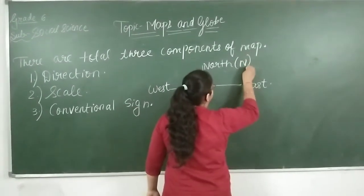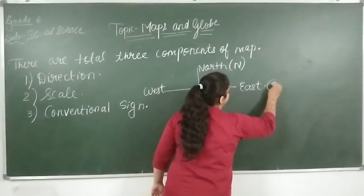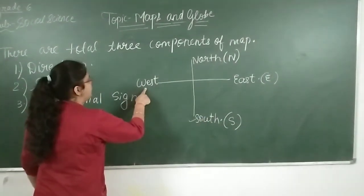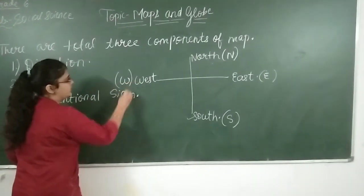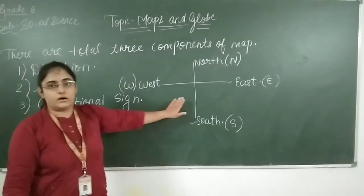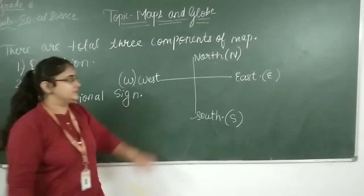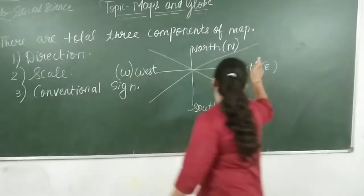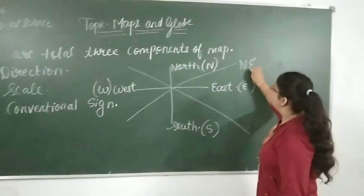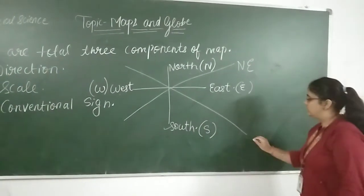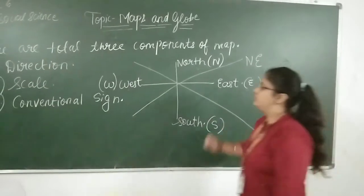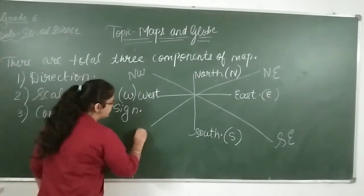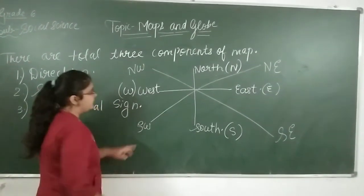North is indicated as N, east as E, south is denoted by S, and west is denoted by W. Other than these, there are four more directions called intermediate directions. They are: north-east, south-east, north-west, and south-west.